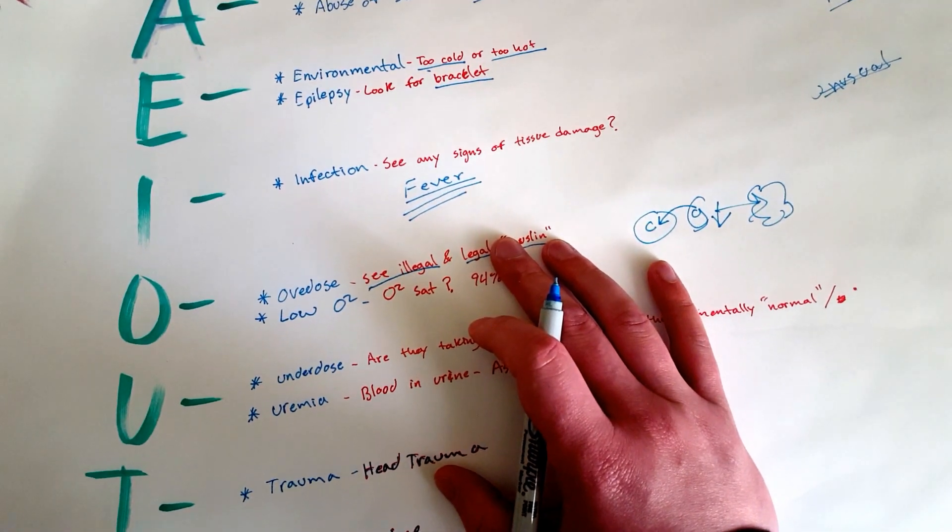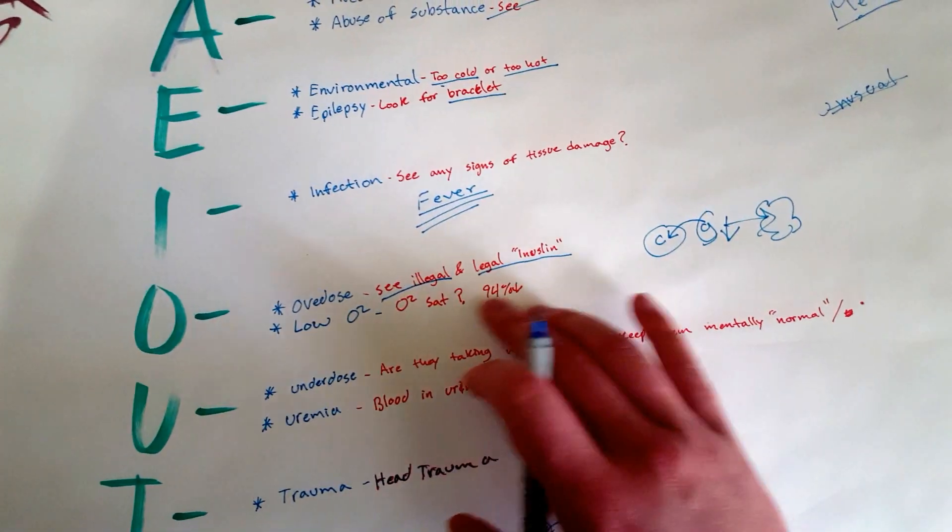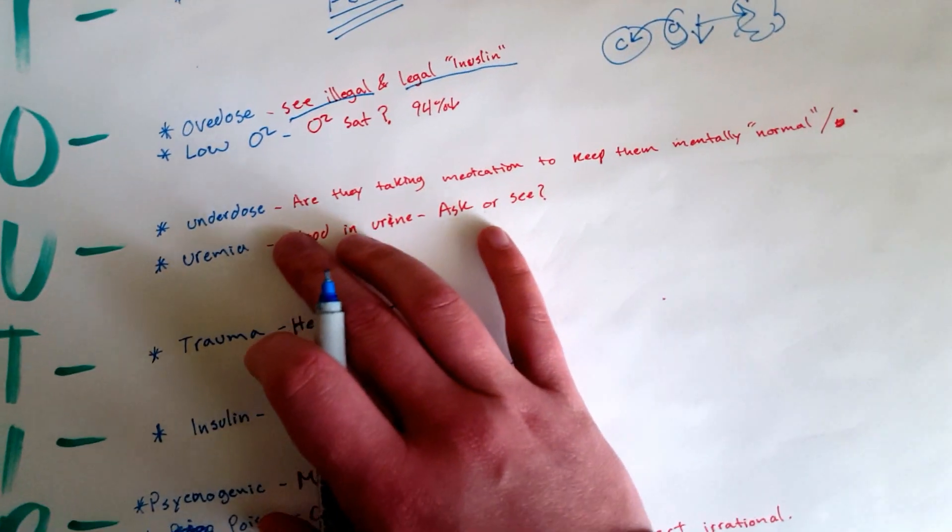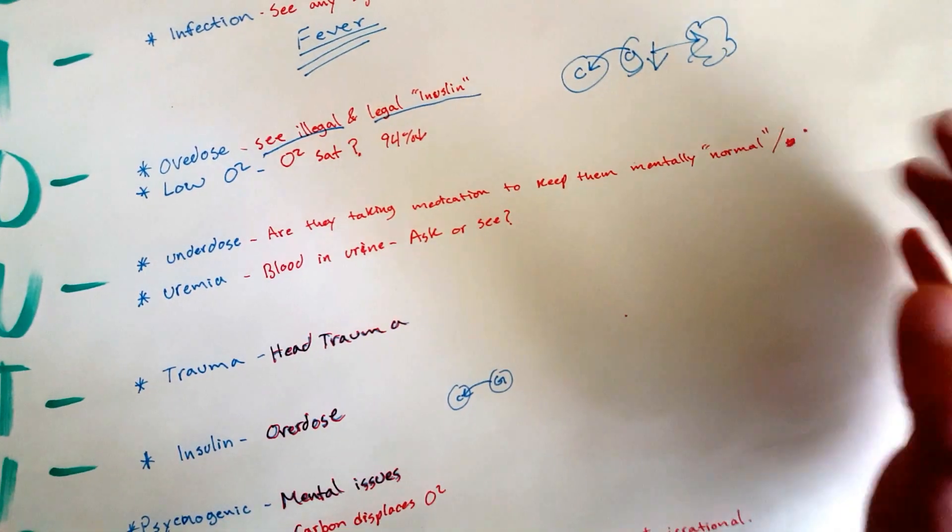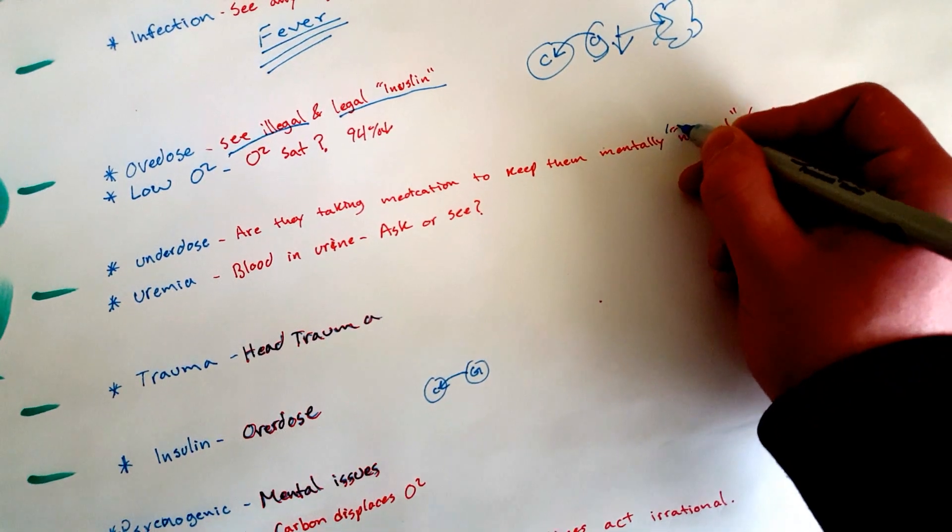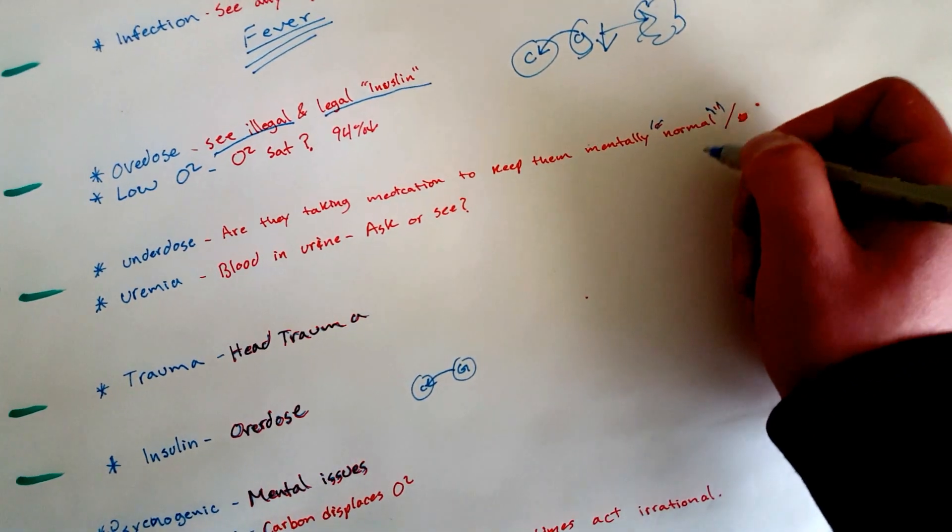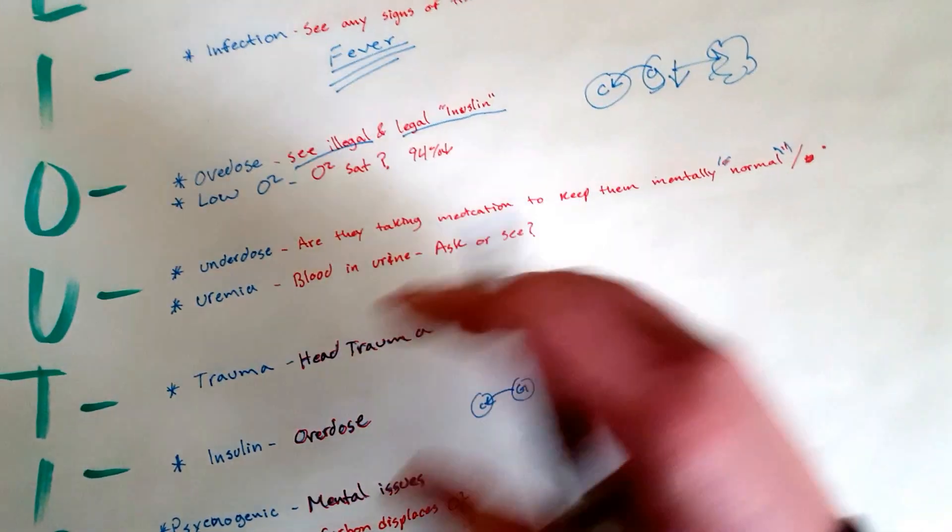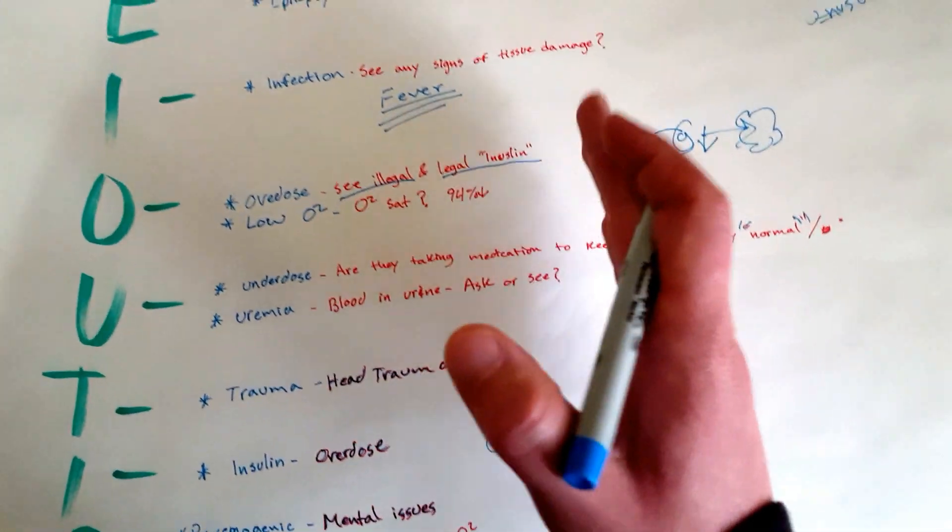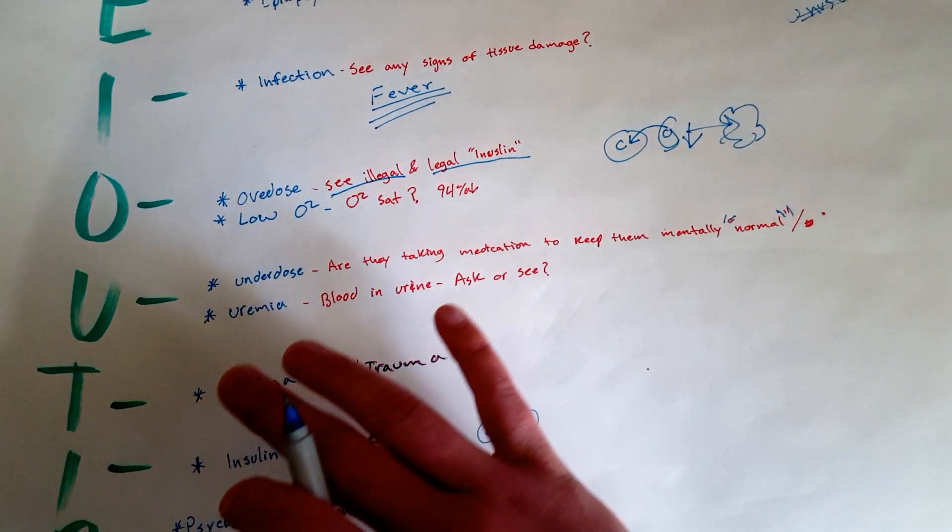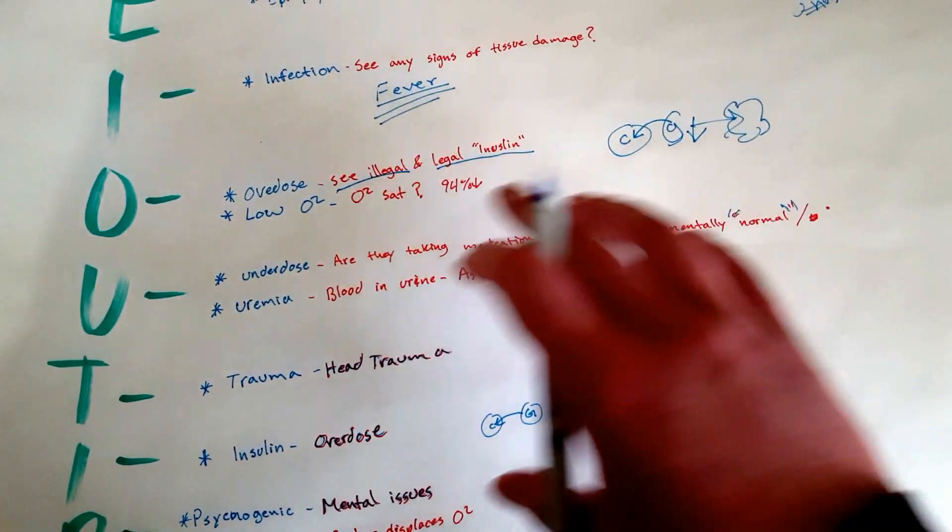U: Underdose. Are they taking medications to keep them normal? Because normal is very subjective, so I put little quotes there. Are they usually on drugs or medication that kind of keep them within a certain lane? You won't really know unless you ask somebody or if you find a medication and you happen to know what it's for.